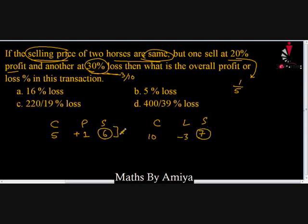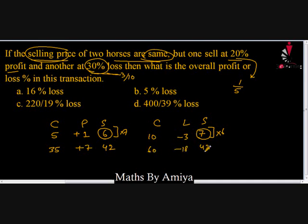To equate the selling prices, we multiply the first transaction by 7 and the second by 6. So for the first: cost price = 35, profit = +7, selling price = 42. For the second: cost price = 60, loss = -18, selling price = 42. Both selling prices are now equal at 42.